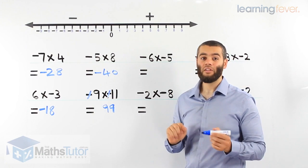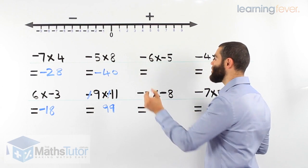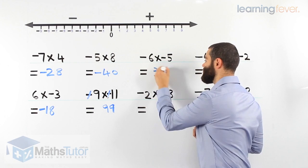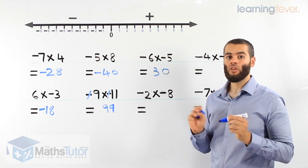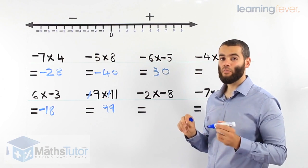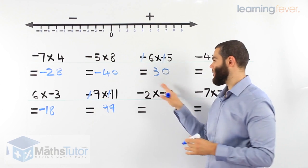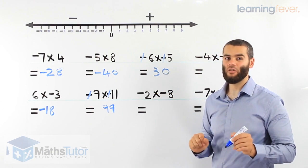Another one. Negative 6 times negative 5. So 6 times 5 we know is 30. Then, we realize that we have two negatives and we said, what happens to the negatives? They go to the movies, they cancel one another out, they're gone. Our answer is positive 30.